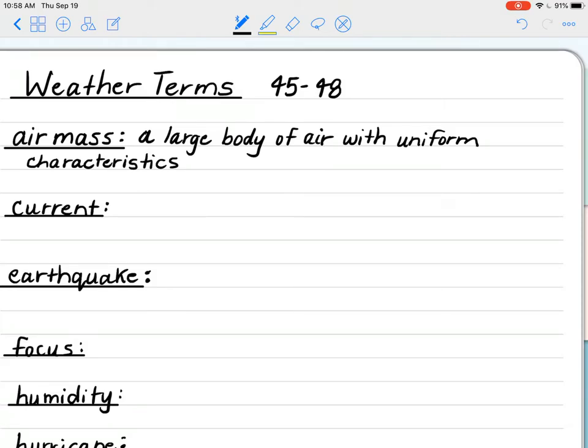A current is a body of water moving in one direction. Rivers have currents. Oceans have currents. A rip current in the ocean is extremely dangerous because that water is moving in one direction, and it will take you with it. So, a current is a body of water.